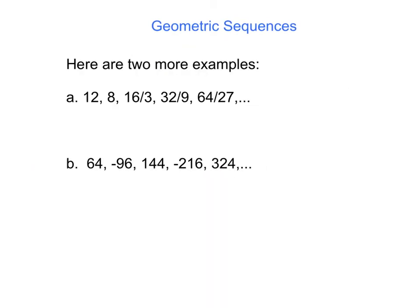Here are two more examples. The first one: 12, 8, 16/3, 32/9, and 64/27 is a geometric sequence. Our seed is 12. And our ratio, if you look closely, it's going to be a fraction, and it's actually 2/3.